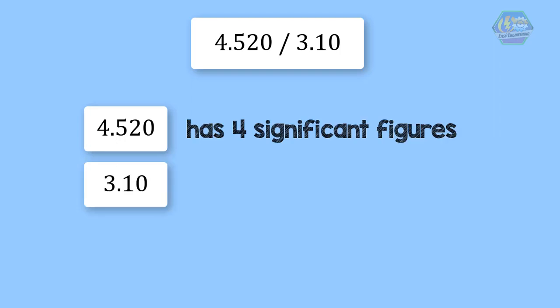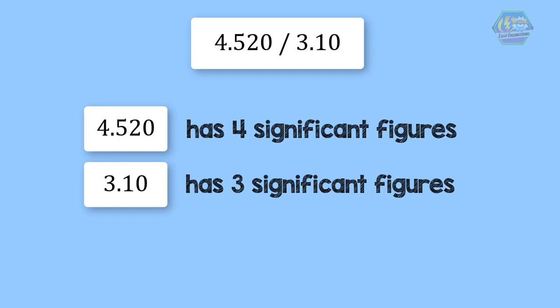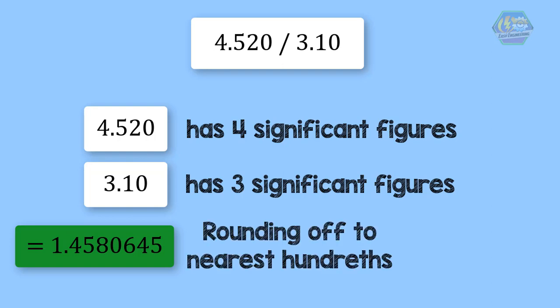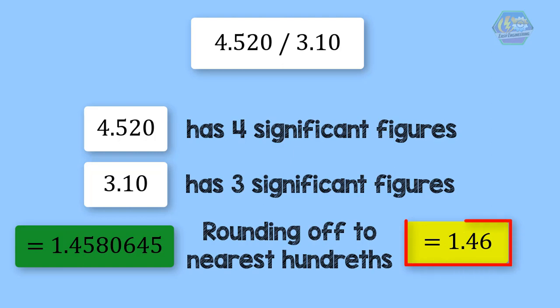Another example: 4.520 divided by 3.10. 4.520 has four significant figures while 3.10 has three significant figures, so our answer should be reported with three significant figures. 4.520 divided by 3.10 equals 1.4580645, then round off to the nearest hundredths to have a three significant figure number, giving 1.46. That's it! I hope you learned something today. Once again, this is EC Engineering.